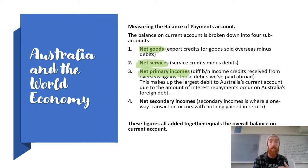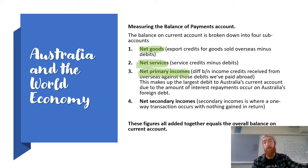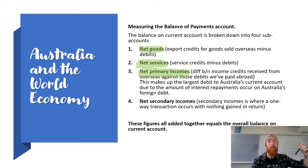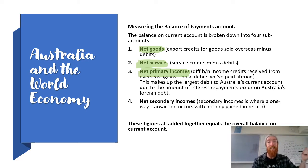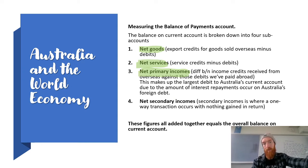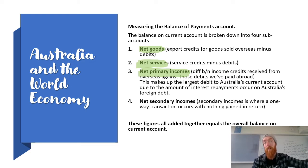For a long time we had a cash rate of 0.1%, which meant lower interest rates worldwide and therefore less interest paid on our foreign debt. But interest rates worldwide have begun to rise, so these interest repayments on our foreign debt are going to start to creep up. Therefore net primary incomes will have more and more debits as we pay more interest repayments overseas, and could be a good reason why in 2023 our current account moves back towards deficit or we see a reduced surplus.